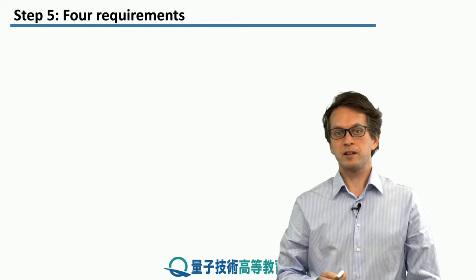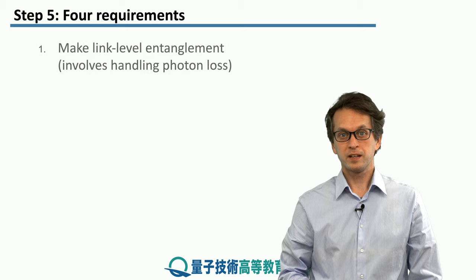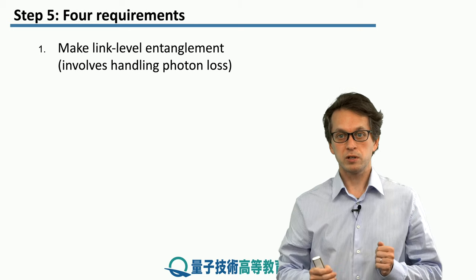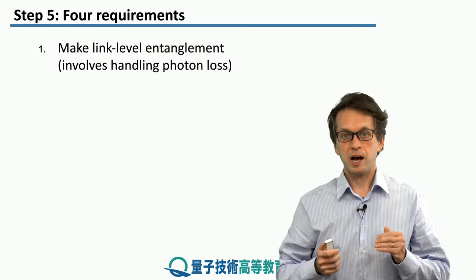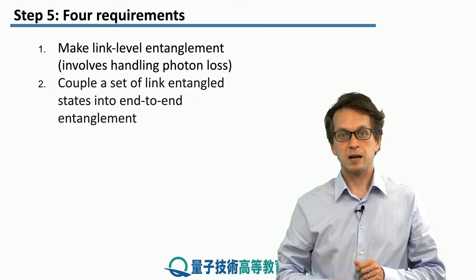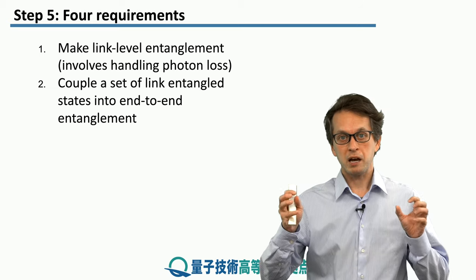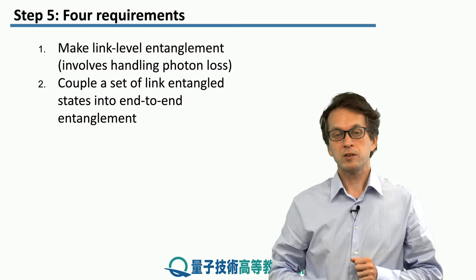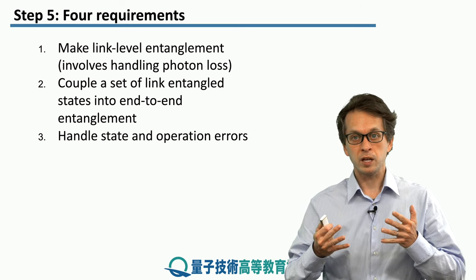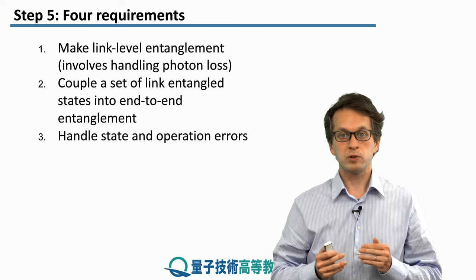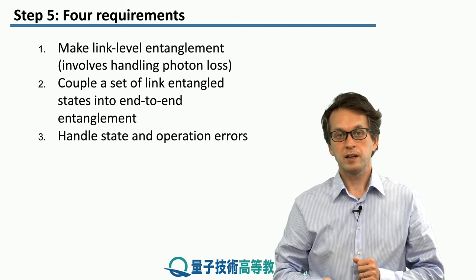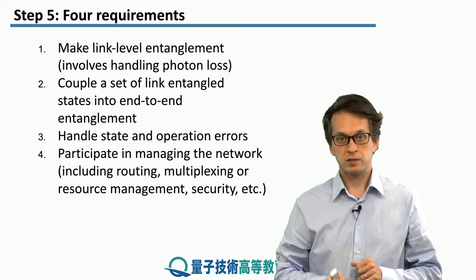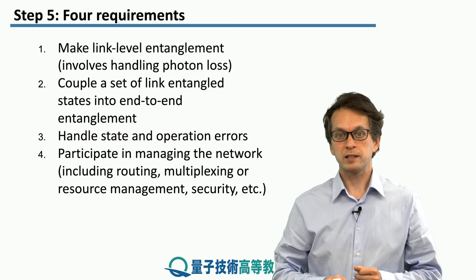In this lesson, we have seen the four requirements for building a quantum network. First, the basic building block: establishing link-level entanglement between neighboring nodes and handling photon losses. Second, establishing end-to-end entanglement between nodes without a direct physical link, using entanglement swapping. Third, handling errors and improving the quality of distributed states using purification. And finally, in this last step, additional considerations for building a network: routing, multiplexing, and resource management.